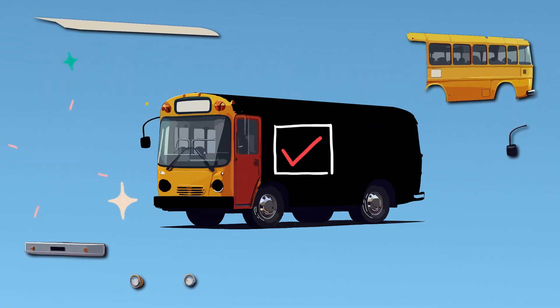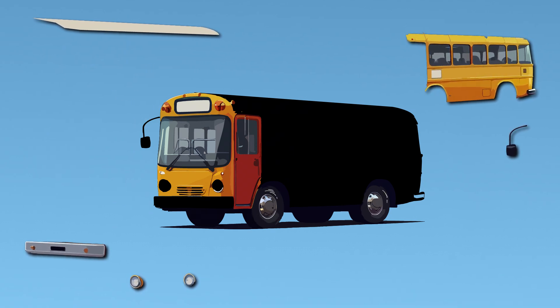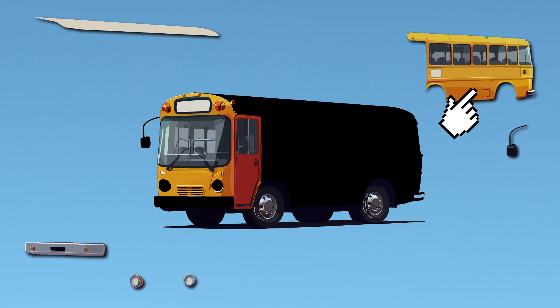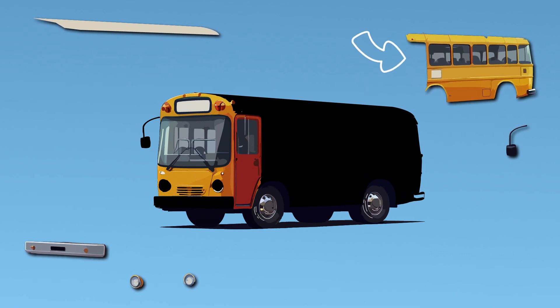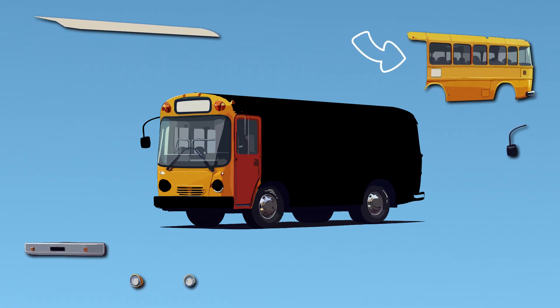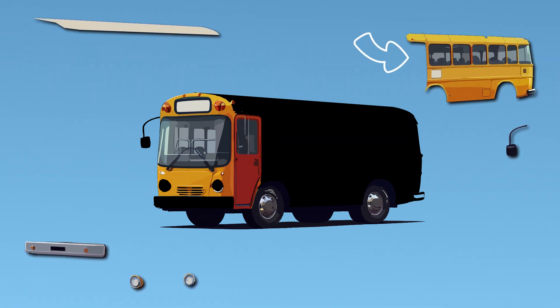Now our bus can move, but it still needs more pieces. Let's see what else we have. Oh, look at this. It's the side of the bus with all the windows. Can you count how many windows there are? One, two, three. So many.